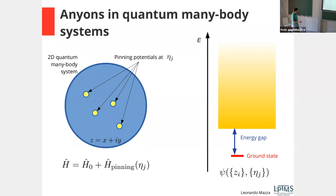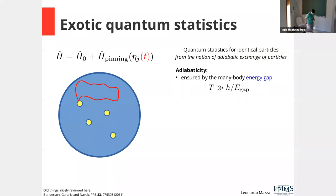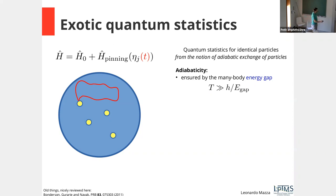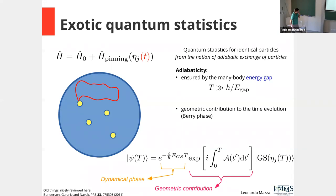The ground state has dynamical degrees of freedom — the positions of the bosons — and the positions of the pinning potential are just parameters of the Hamiltonian that I control from outside. I want to discuss anyon statistics using adiabatic exchange. I turn the positions into time-dependent quantities and move one anyon around the other, coming back to the original position. This can be done adiabatically because the energy gap provides the relevant time scale.